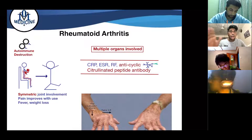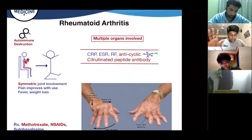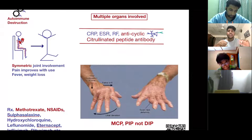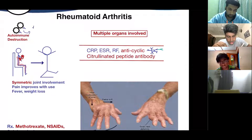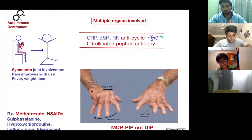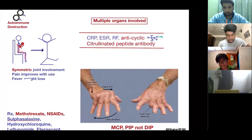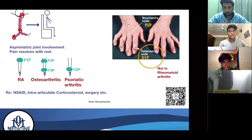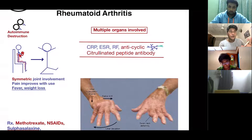Rheumatoid arthritis is an autoimmune destruction of the joints, and multiple organs are involved. The key point is symmetrical joint involvement. Think of antibodies attaching to the joints causing inflammation — when you move, the antibodies get dislodged, so the pain improves with use. When you wake up in the morning you have morning stiffness, which usually goes away within one hour with use. There are also systemic symptoms such as fever and weight loss, which are absent in osteoarthritis. Labs show elevated CRP, ESR, and rheumatoid factor.